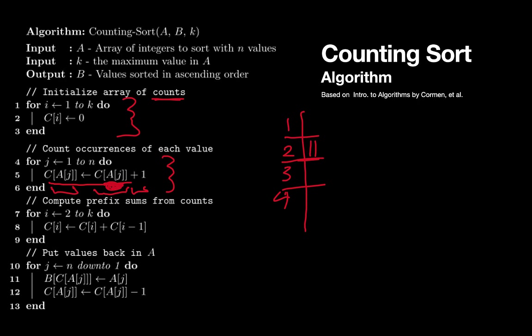Okay the third phase of the algorithm goes through and it changes the meaning of this C array and instead it's going to be something that's referred to as a prefix sum. Basically it's going to be a count of the number of things that come before that value in the array A.